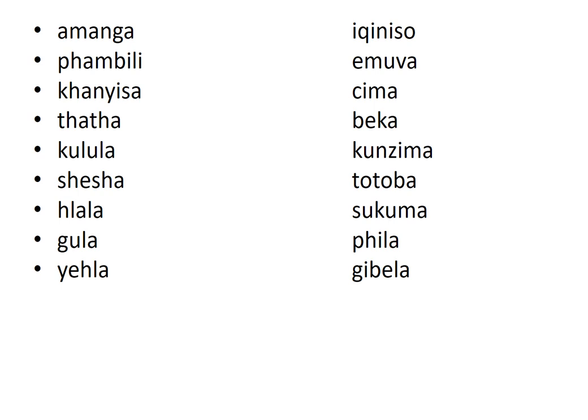Continuing the word pairs: khanyisa (put the light on) — its opposite is ima; thatha (to take) — its opposite is beka; unula (light or easy) — its opposite is unzima; shesha (fast or quick) — its opposite is dotomba; sala (to sit) — its opposite is sukuma; gula (to become sick) — its opposite is phila; yehla (to go down from a car or tree) — its opposite is jimena.